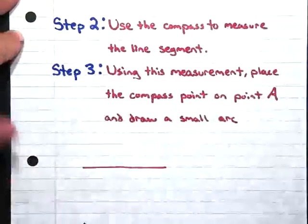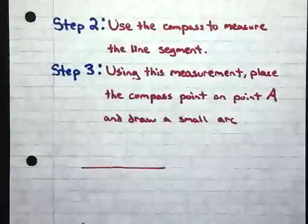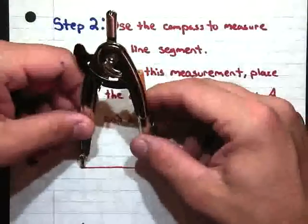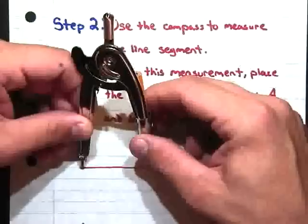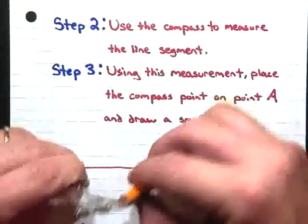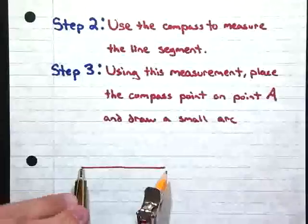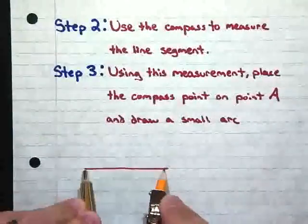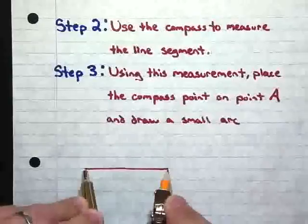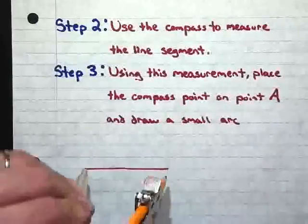Step two, we want to use the compass to measure the line segment. I take my compass point and put it on one end. Open my compass or close my compass until that pencil is the same length as my line. Now that I have it, I have my measurement.